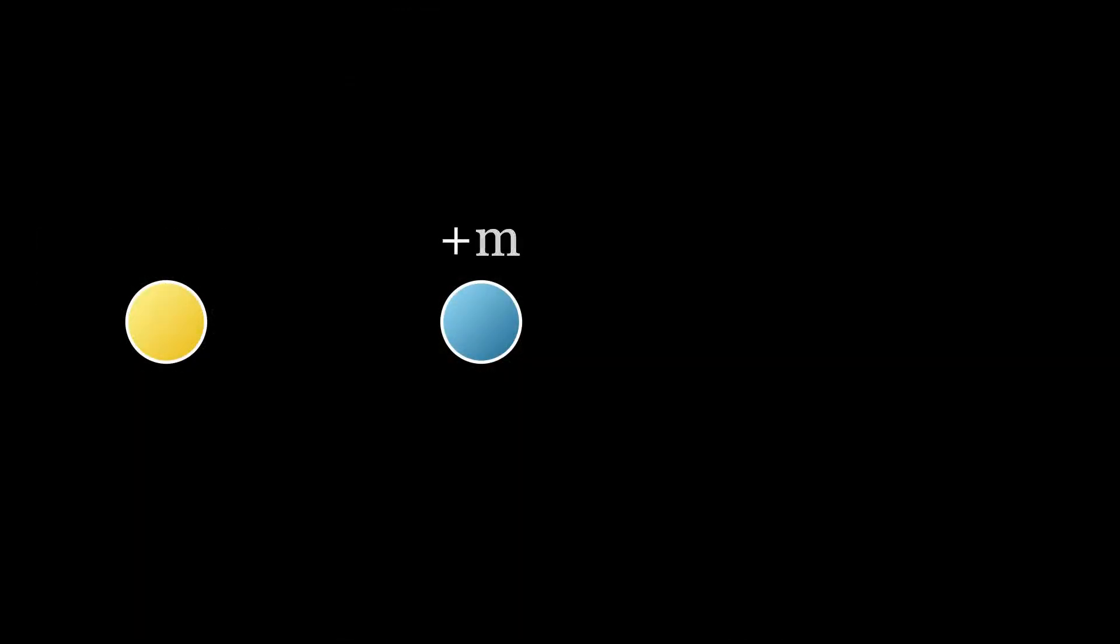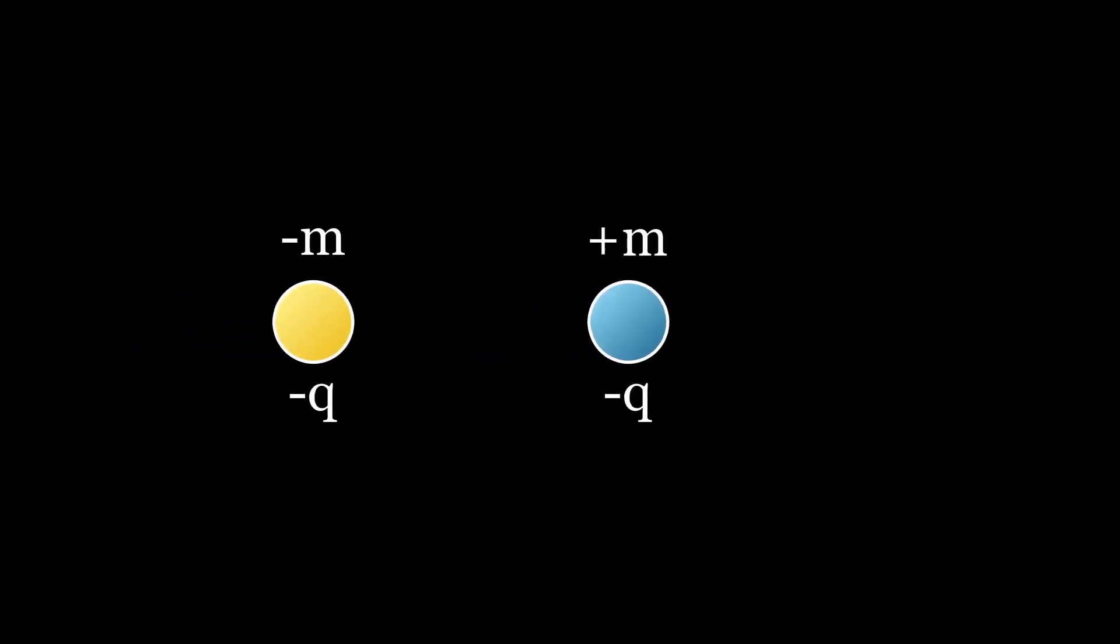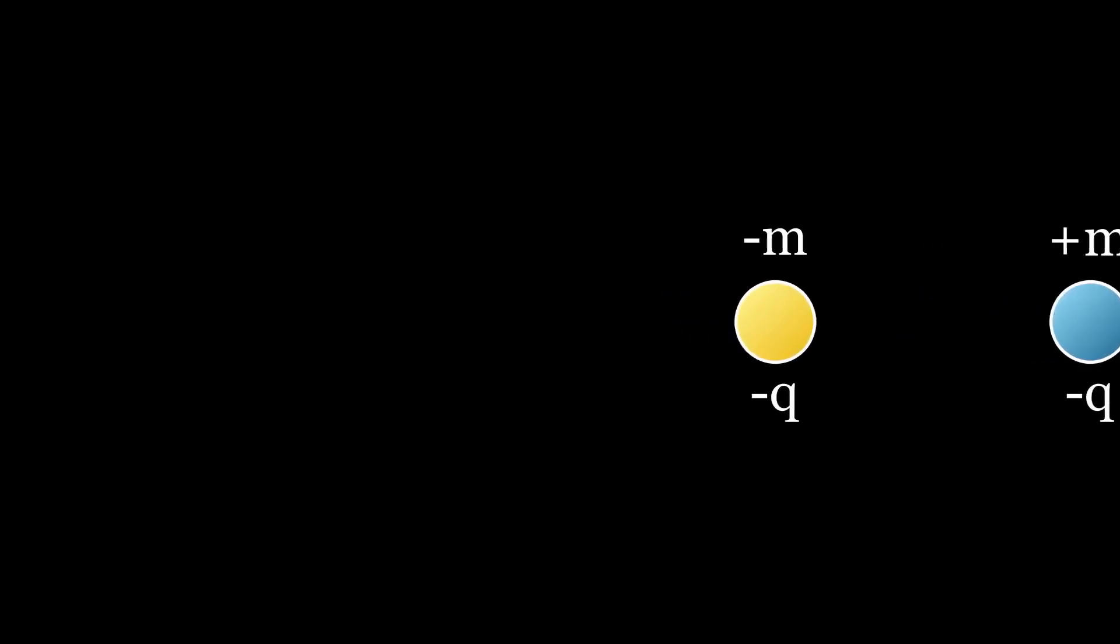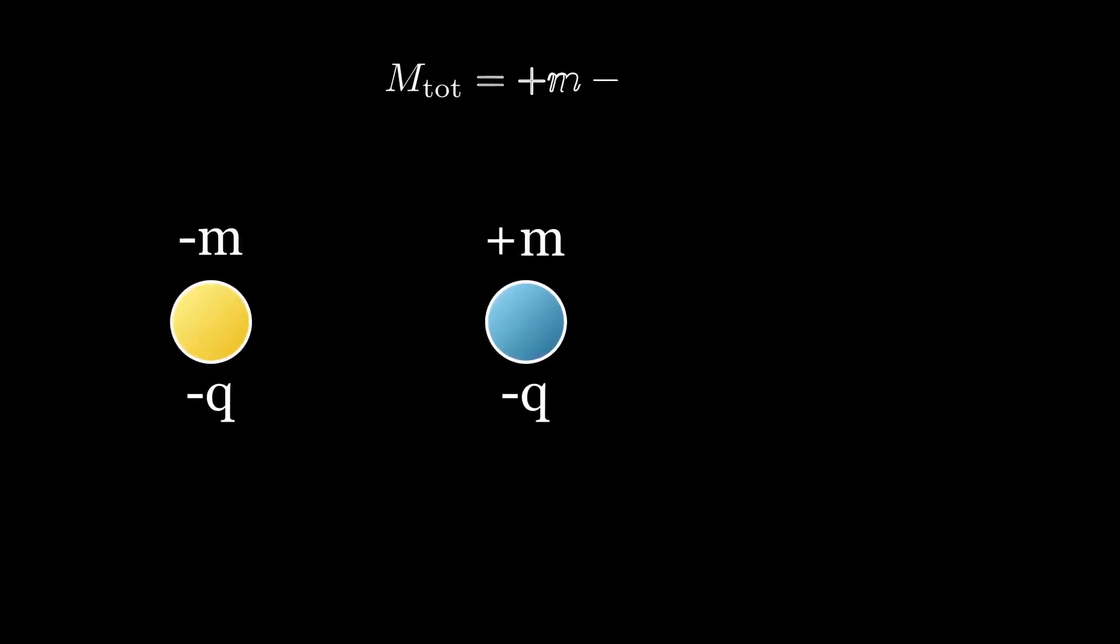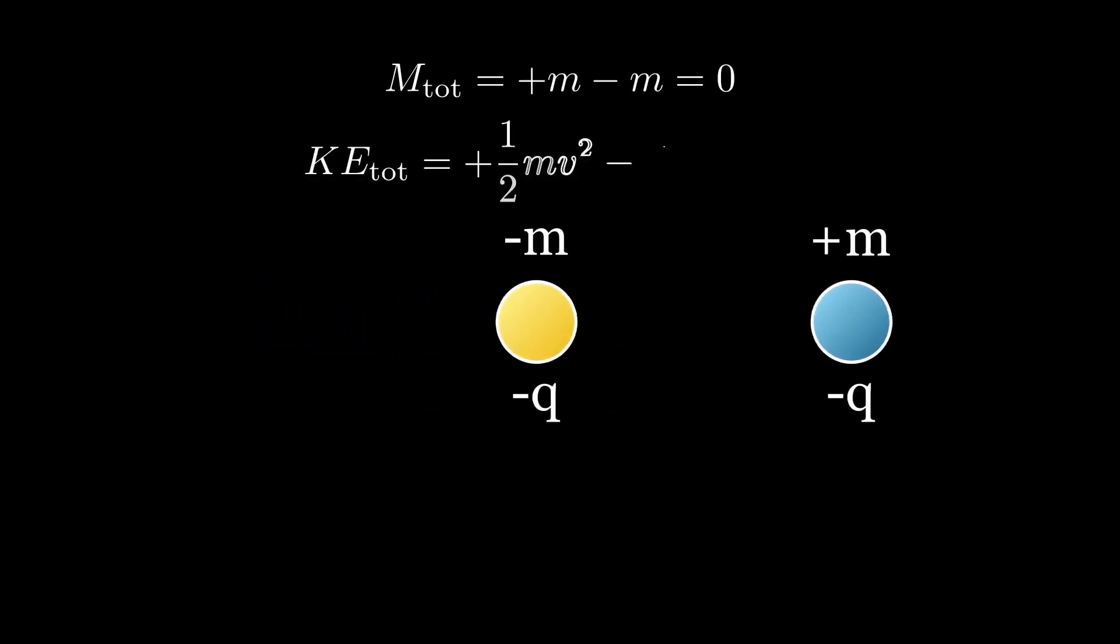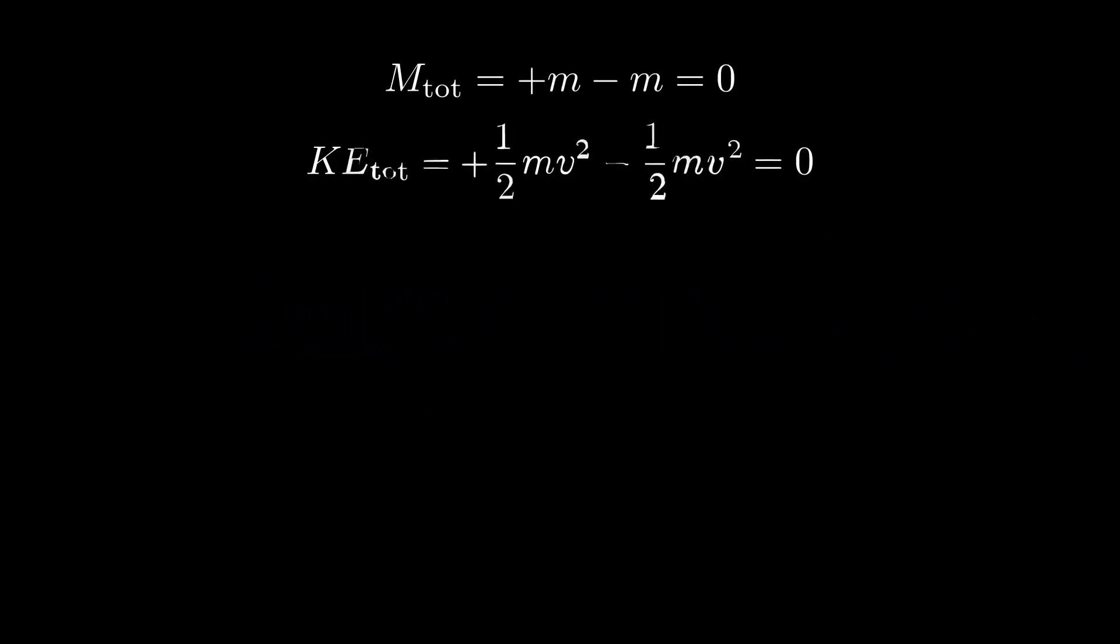If you have two particles of positive and negative mass where one chases the other, they can theoretically accelerate forever. But that doesn't generate energy from nowhere. Their total mass is zero, and that means their total kinetic energy also stays at a constant zero.